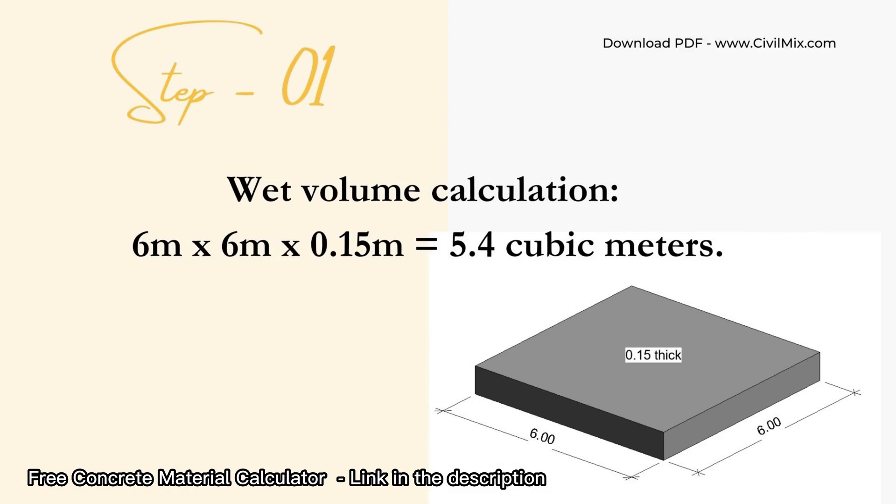The first step is to calculate the wet volume of concrete. The wet volume is the volume of the concrete in its plastic or fresh state, which equals the volume of all ingredients used to make the concrete. For our concrete slab, the wet volume is calculated by multiplying the length, breadth, and height of the slab. The wet volume is 5.4 cubic meters.